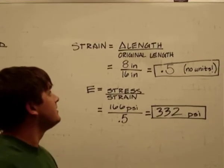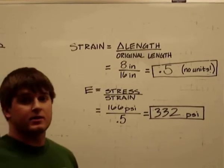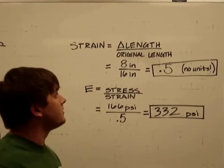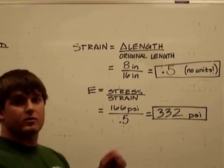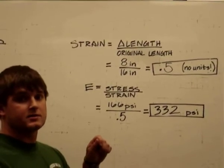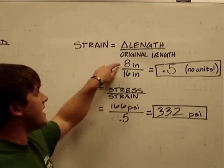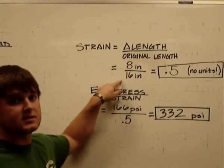Next, we'll need to find the strain. The strain is the change in the length of the bungee cord with the load on it over the original length. The length of the cord with the backpack on it was 24 inches, so the change in the length was 8 inches. The original length was 16 inches, giving us a strain of 0.5.